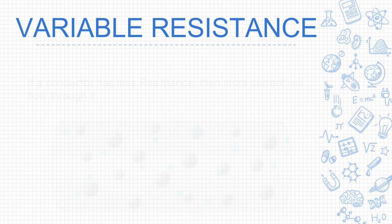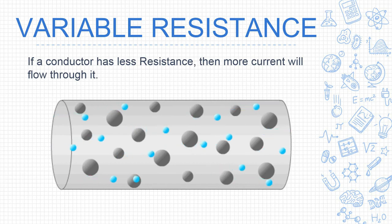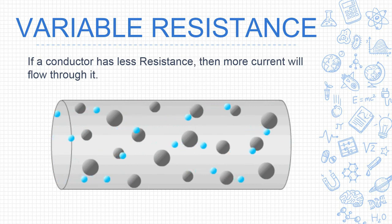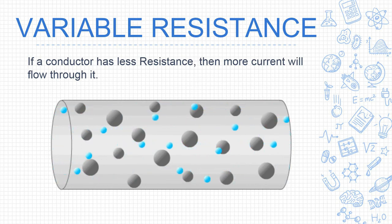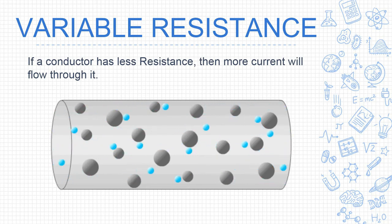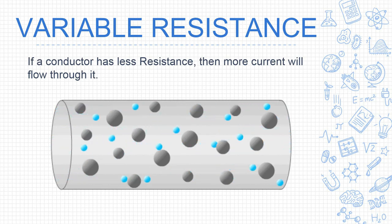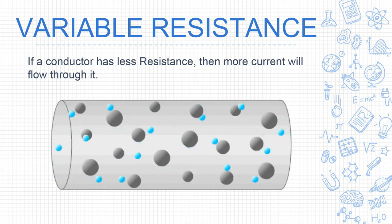If a conductor has less resistance, then more current will flow through it. The more resistance a conductor has, the more it blocks the flow of charges. If there is more resistance, less current flows; if there is less resistance, more current flows.